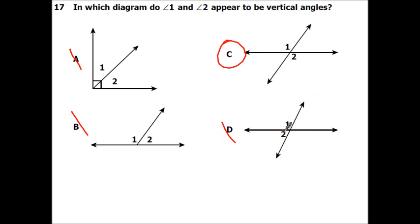In this case, angle one and angle two would be supplementary angles. These would be supplementary. These would be complementary. These would also be adjacent, adjacent, and adjacent.